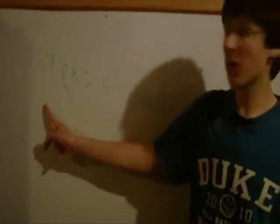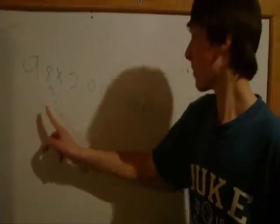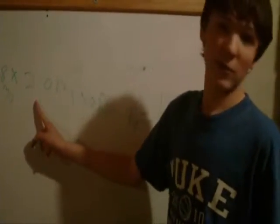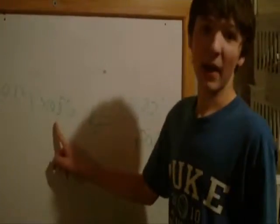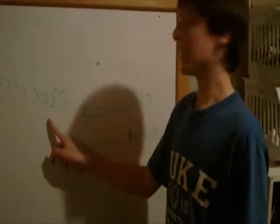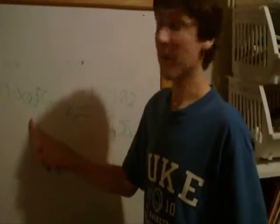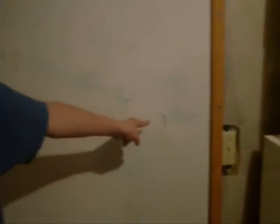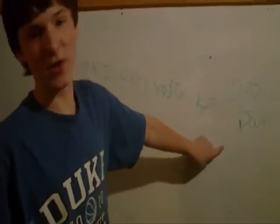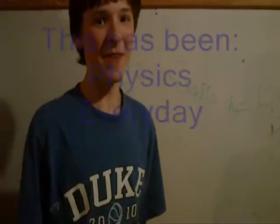Thanks to physics we can also calculate the gravitational potential energy of the tennis ball. Gravitational potential energy is energy stored in an object due to gravity. All we do to calculate it is multiply the acceleration due to gravity — which is 9.8 on Earth — by the distance traveled, 2 meters, by the mass of the object, which is 0.056 kilograms. Always in kilograms. Multiply it all together for a grand total of 1.092 joules, because energy is measured in joules. Thanks for watching my video.